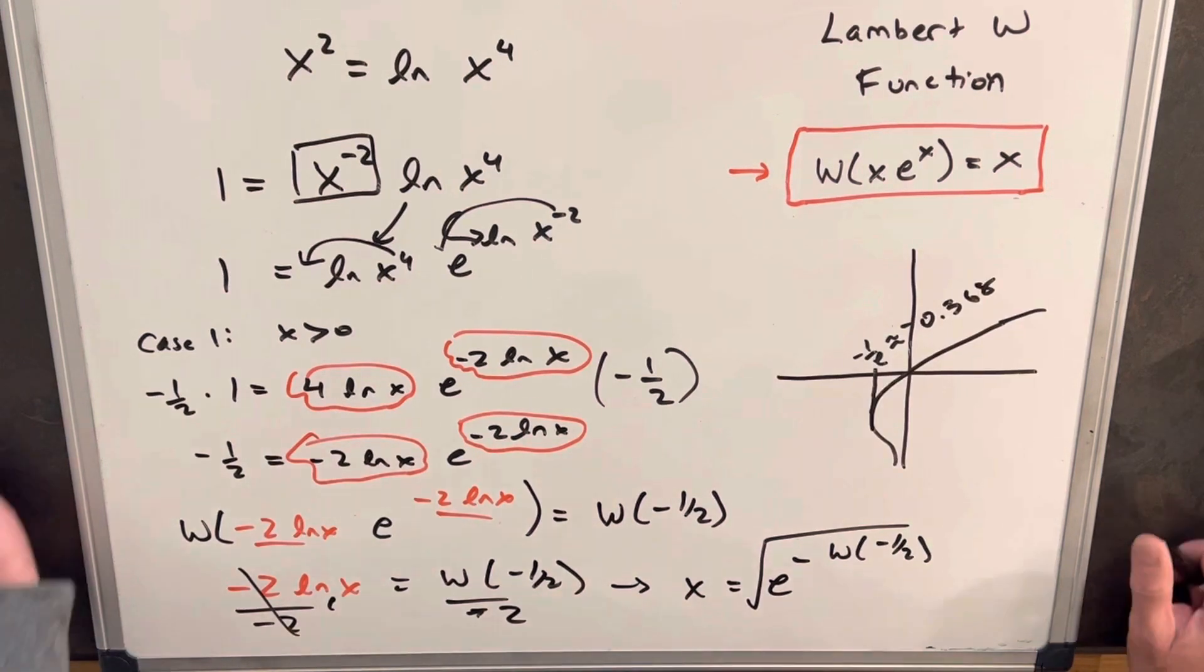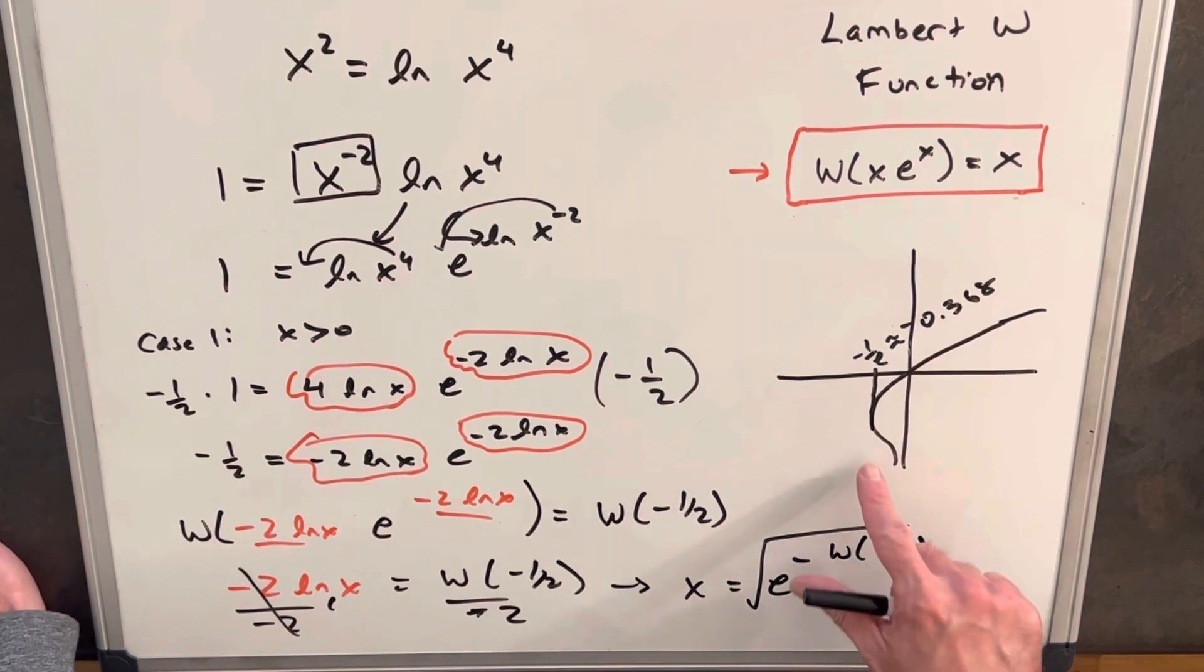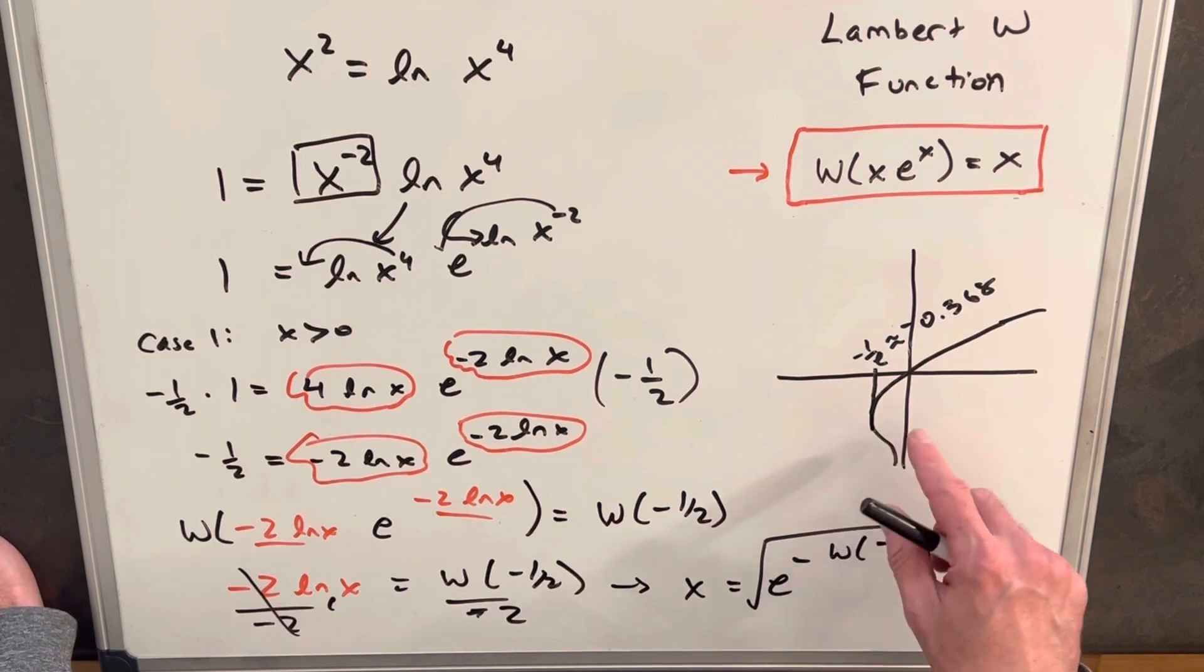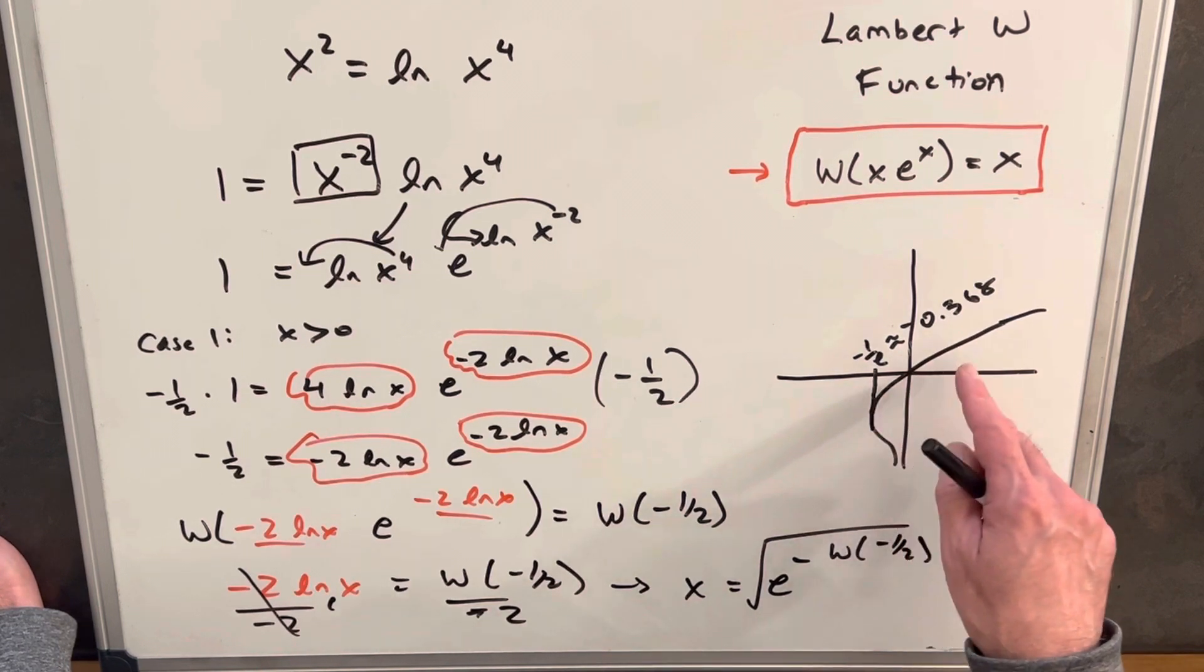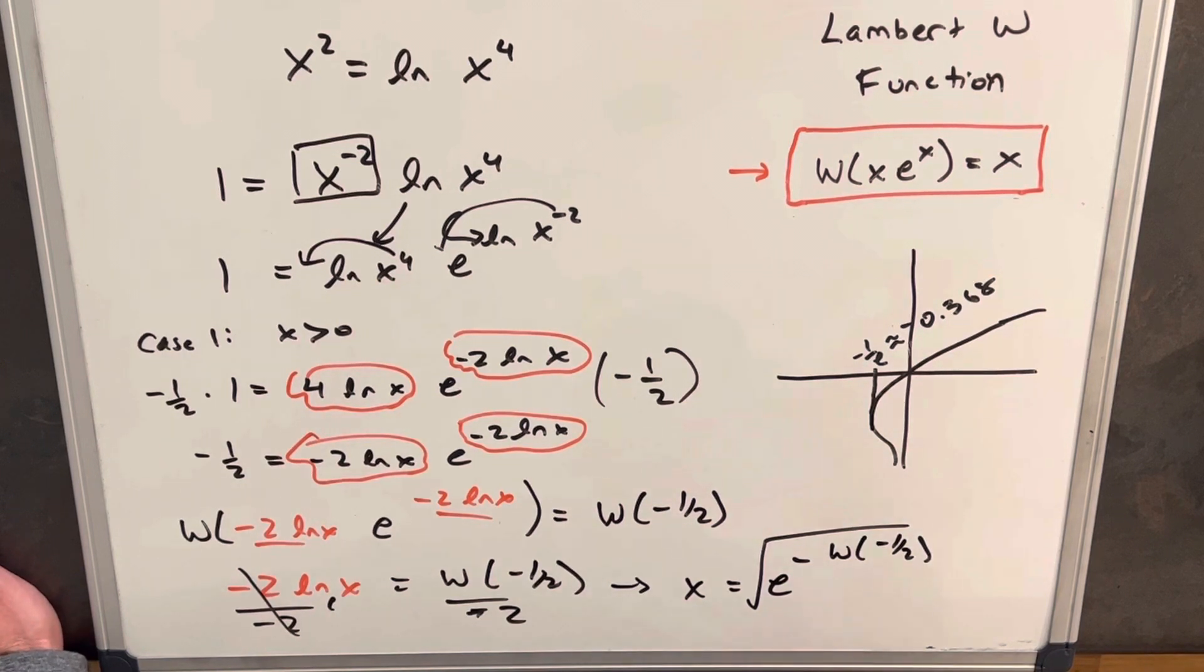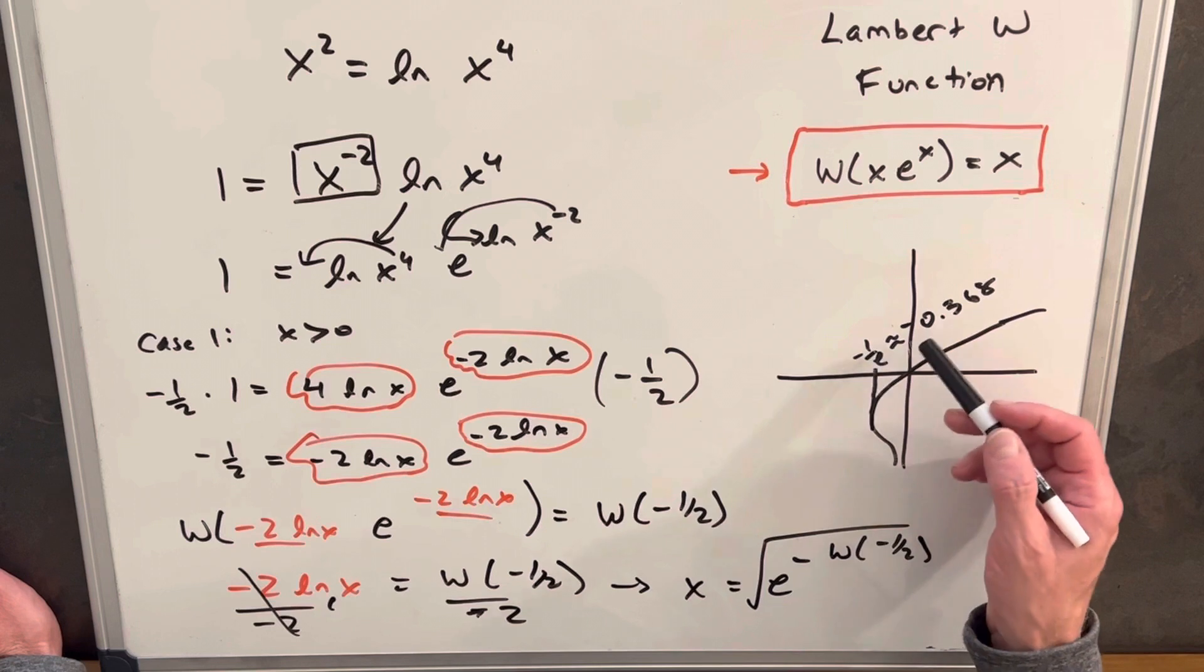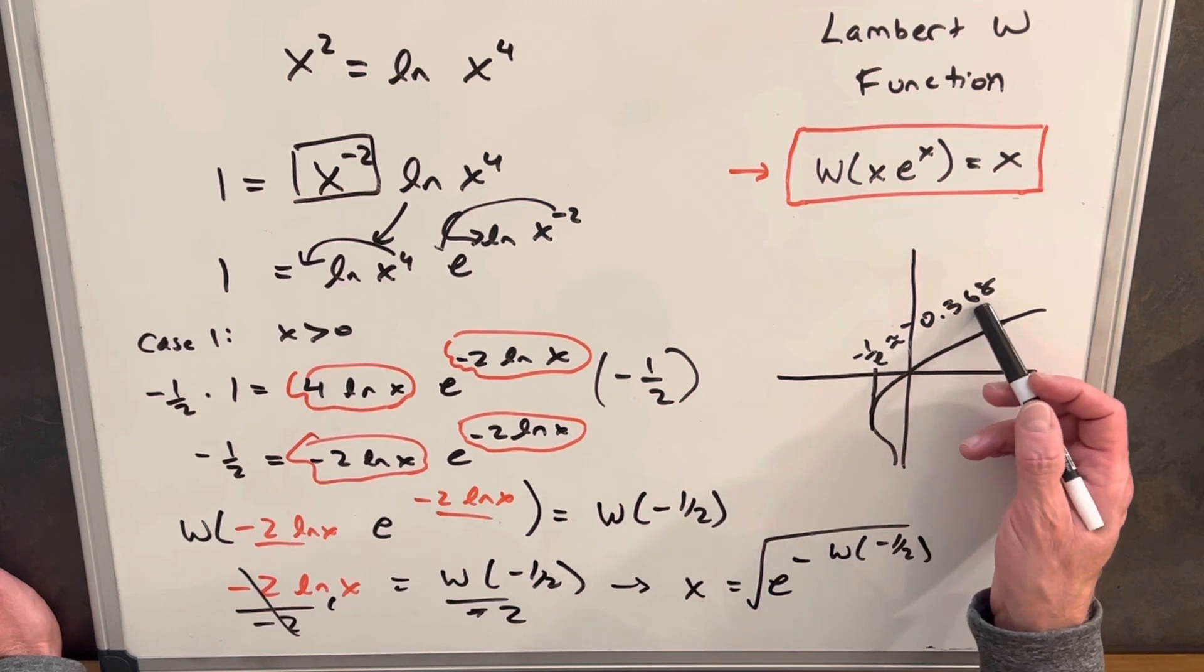So looking at our graph of the Lambert W function, the graph shows us where our real values are. This is where we can find our nice real values, just finding points on this graph. And so we notice that all of our real values start at minus 1 over e, which is around minus 0.368.